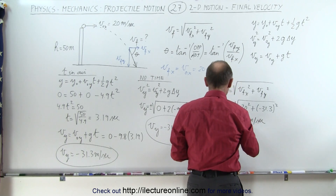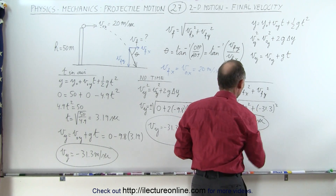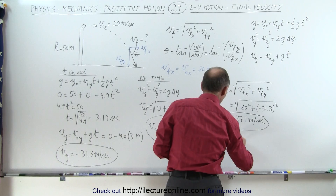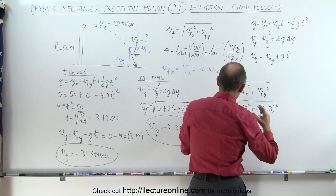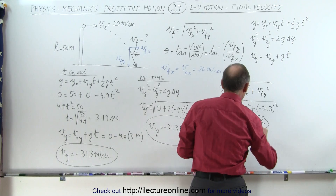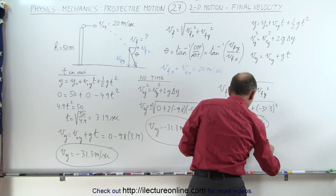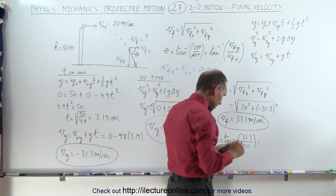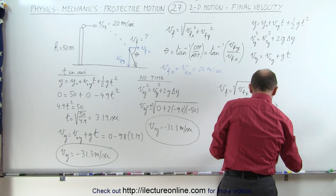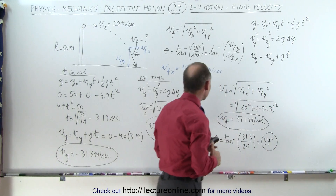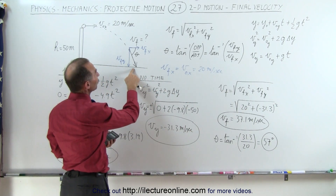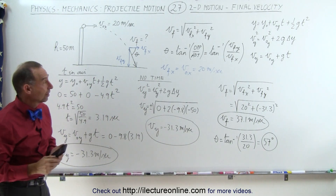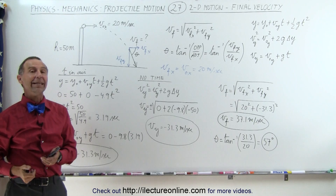To find the angle: theta = arctan(v_final_y / v_final_x) = arctan(31.3 / 20) = 57 degrees. So the final velocity is 37.1 meters per second at 57 degrees below the horizontal. And that's how we find the final velocity in projectile motion.